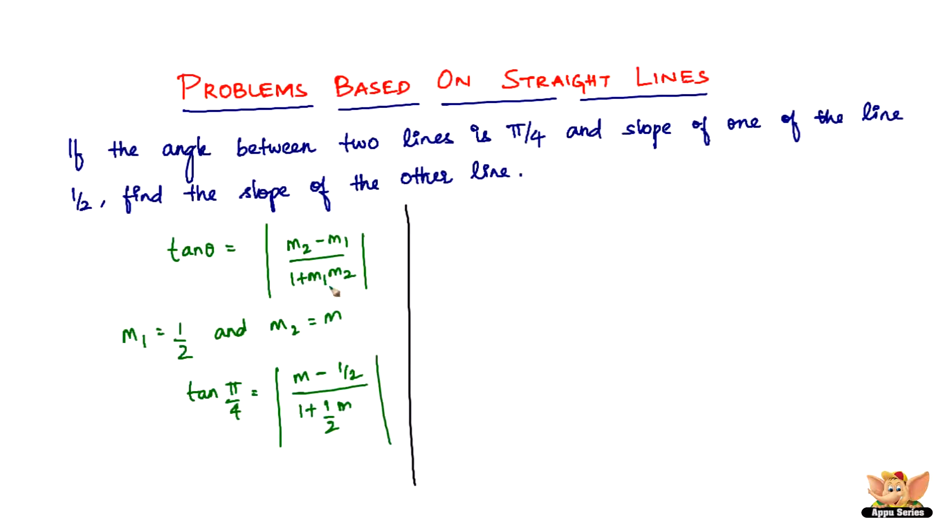So solving this, tan 45 degrees is 1, and then m minus 1 by 2 is nothing but 2m minus 1 divided by 2, divided by 1 plus half m is nothing but 2 plus m divided by 2. Then 1 equals mod of 2m minus 1 by 2 divided by 2 plus m by 2. 2 and 2 gets cancelled.